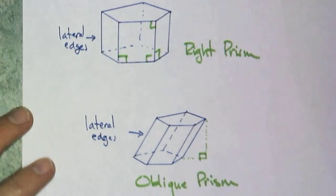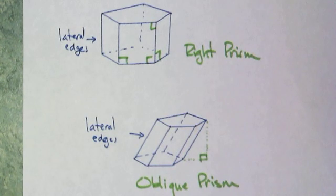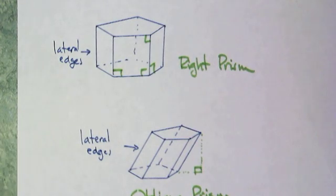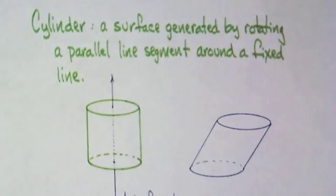So the bases are the two polygons that are congruent. And in a right prism, the lateral edges are indeed perpendicular to the base. So when I draw these out for you, I will mark the right angle, whether it's going to be at the polygon or outside the polyhedron.